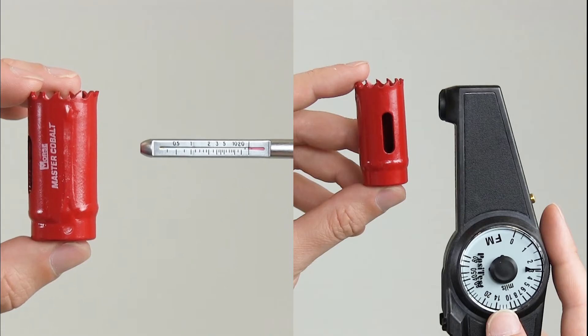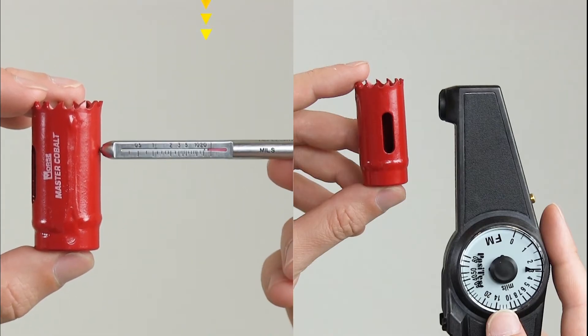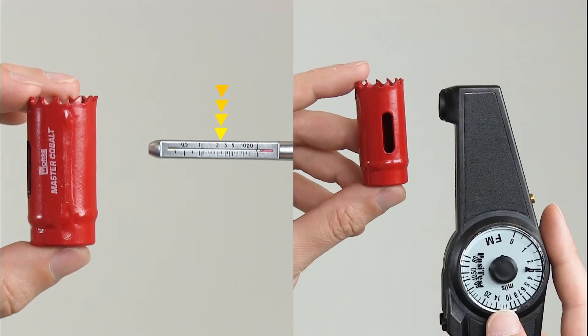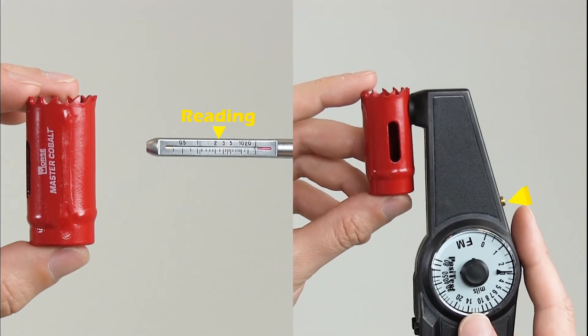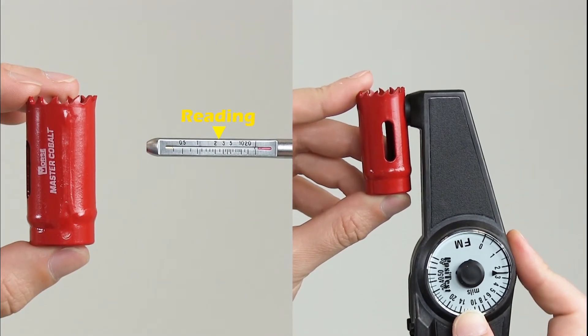Simply place the instrument on the surface and apply force on the spring-loaded magnet until it pulls off. The instrument converts the force required to pull the magnet from the surface into a calibrated thickness reading.